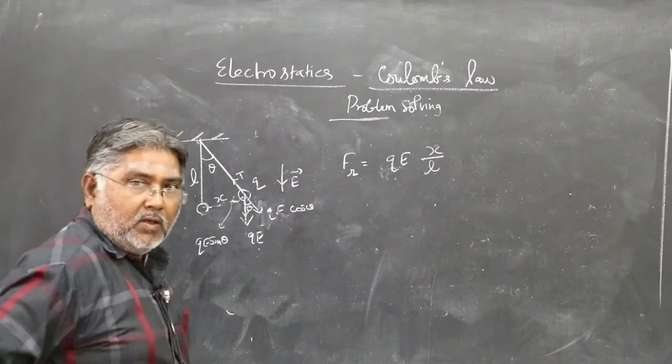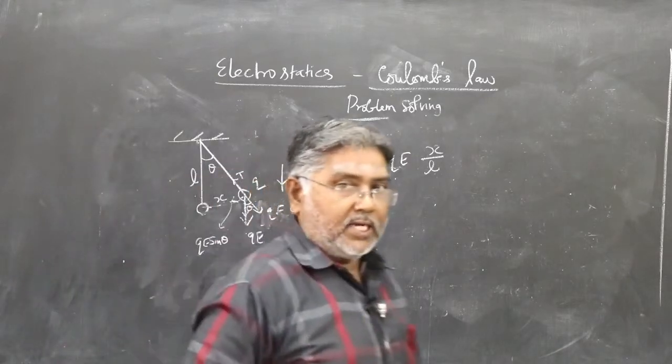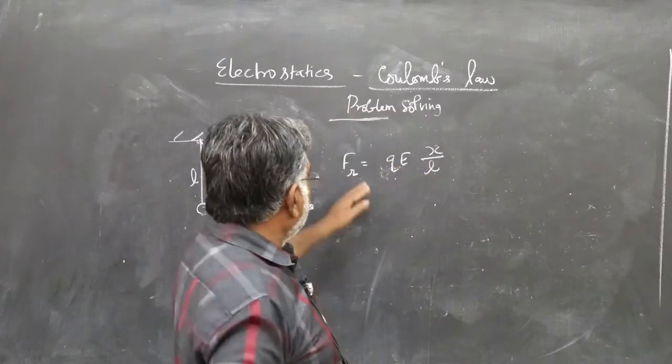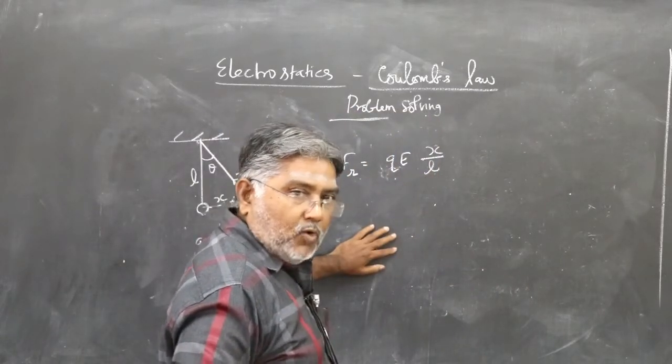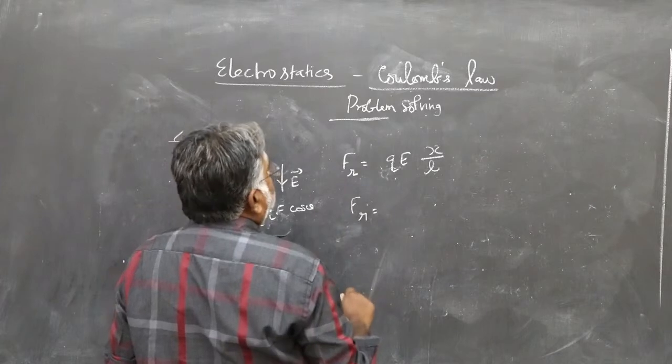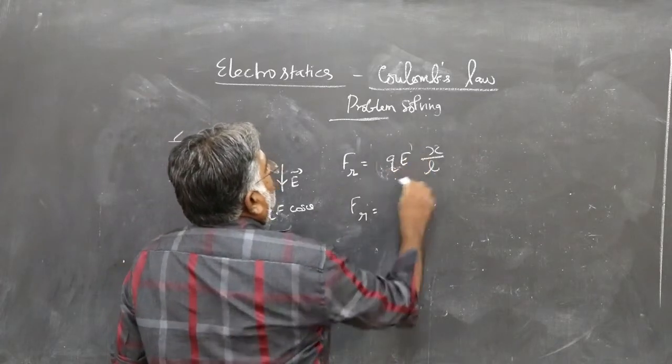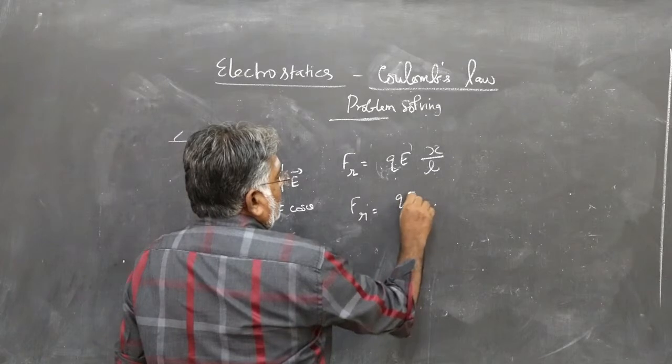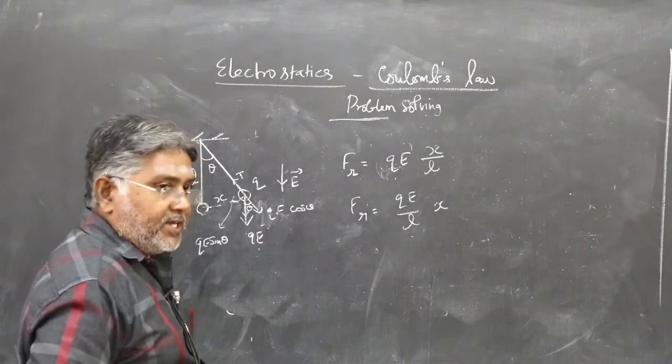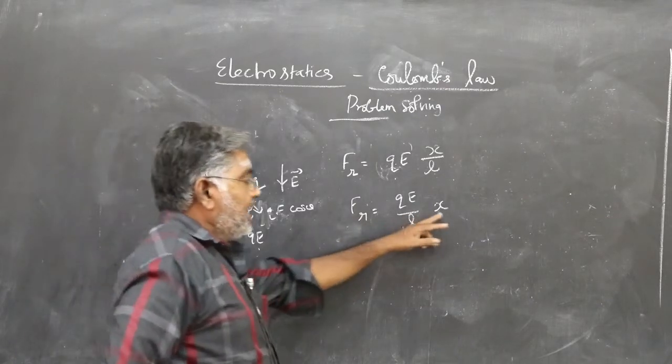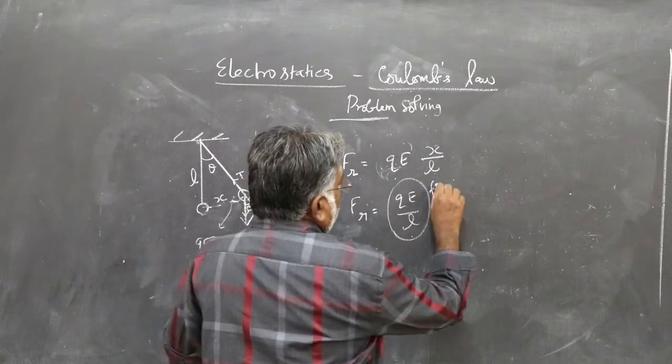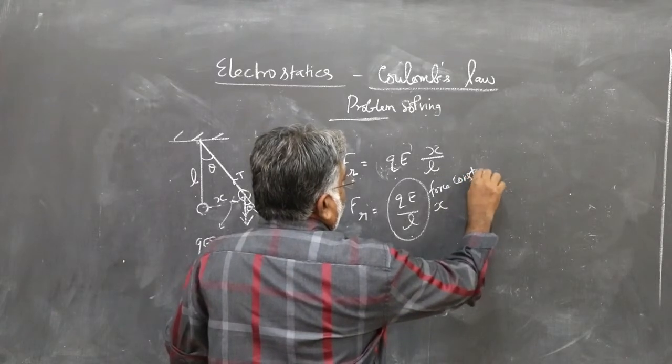You can introduce a negative symbol and explain why that negative symbol is put in the expression, or you can simply say the magnitude of the restoring force is this. So, the restoring force FR is kx numerically. If you compare it with F equals kx, this QE by L will be the force constant, similar to k.